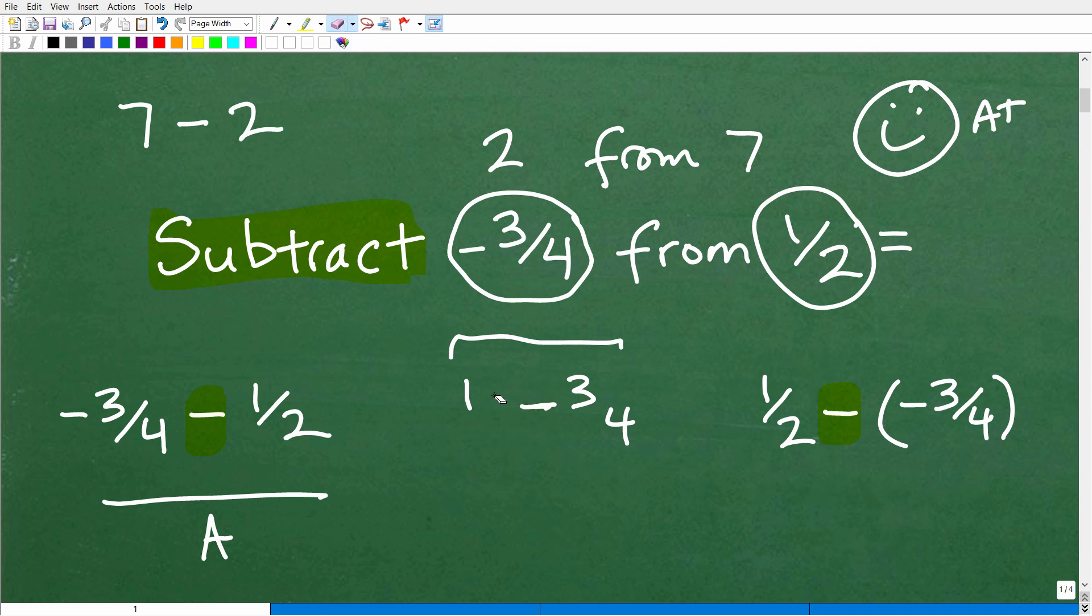So what we have to do is we want to take away this negative three-fourths from one-half. So we have the subtraction operator. Here is the value, this negative three-fourths. We're going to subtract it away from one-half. So you have to be very careful when you set this up and use parentheses, especially when you're dealing with a negative value. So this is the big part. I would say this is like 50% of getting this problem correct.